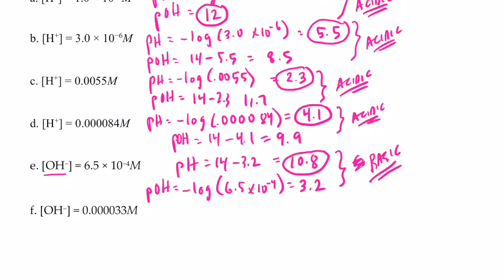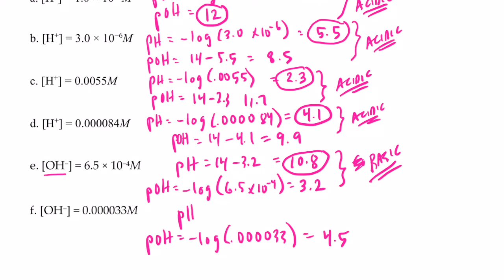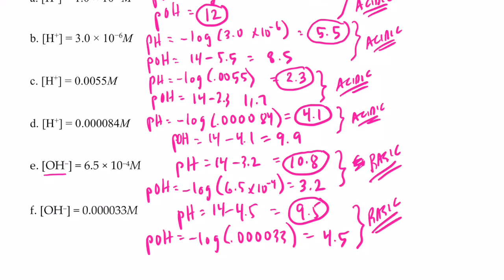And let's do letter F. Once again, I'm giving you the hydroxide concentration. So let's find the pOH first — that will be the negative log of 0.000033. On our calculator: negative log 0.000033, enter — and I get 4.5. So the pH would be 14 minus 4.5, which is 9.5. Since the pH is greater than 7 again, this would be another solution that is basic.